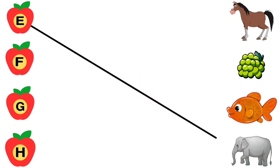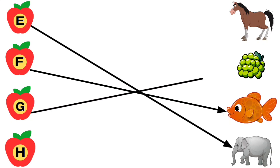E for Elephant, F for Fish, G for Grapes, H for Horse.